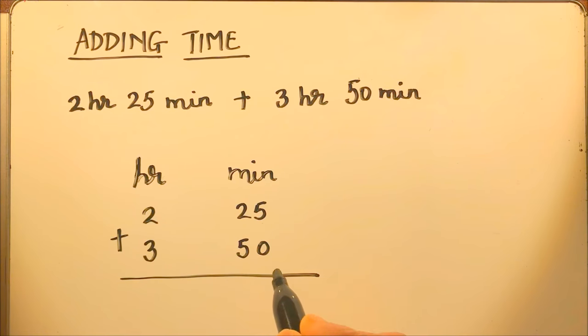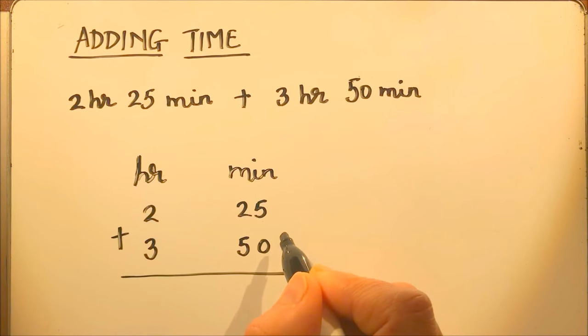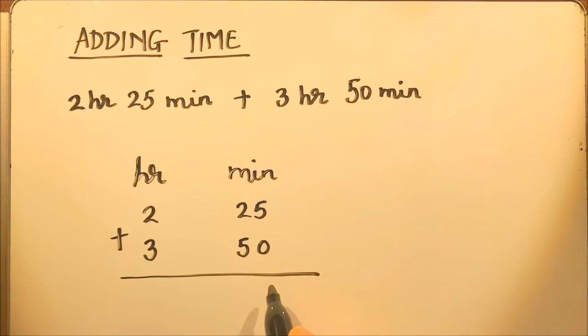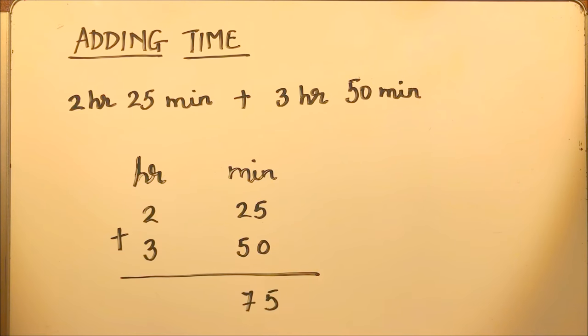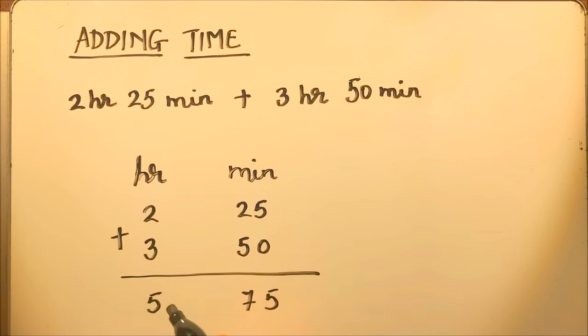So we will add this. So here we will add minutes. So here it will be 5 plus 0 is 5 and 2 plus 5 is 7. So this is 75 minutes and 2 plus 3 is 5 hours.